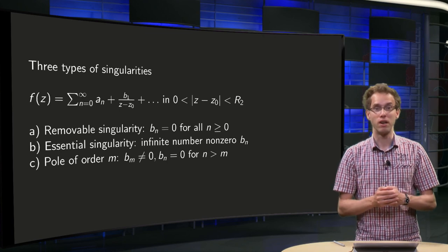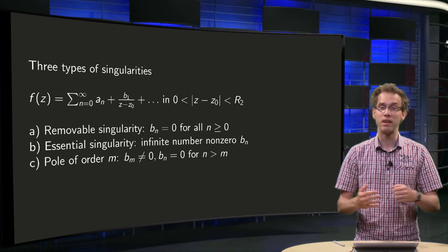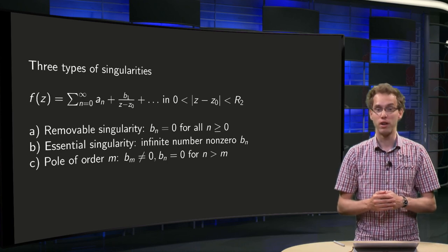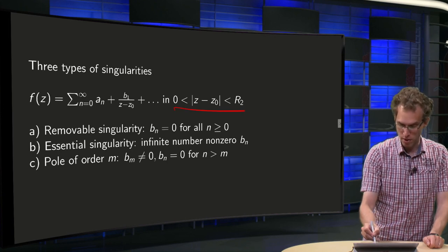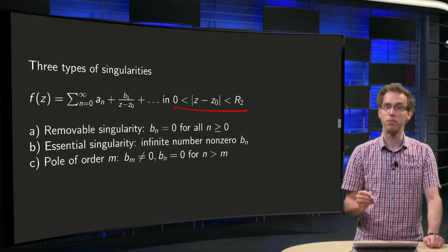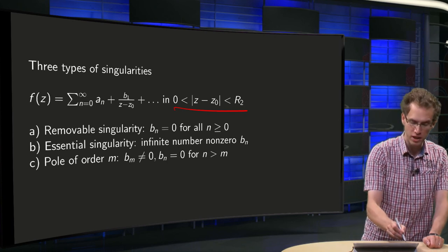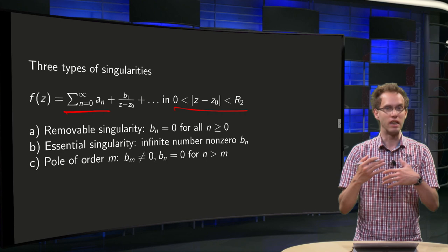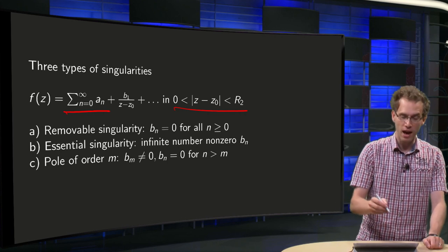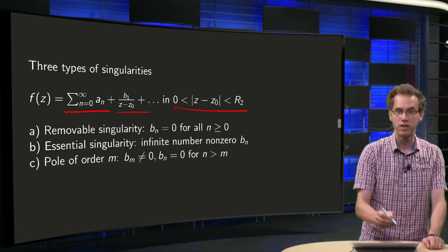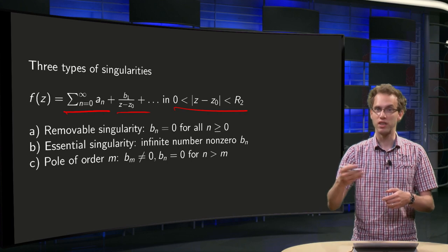Suppose f(z) has a singularity at z₀. That means we can make a Laurent expansion in the annulus where |z − z₀| is between 0 and some radius r₂. f(z) has some analytic part — not so interesting for integration, it will vanish anyway — and then some principal part: b₁ over (z − z₀) plus b₂ over (z − z₀)², etc.